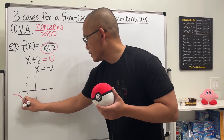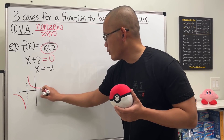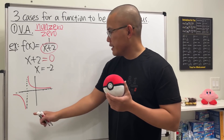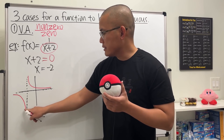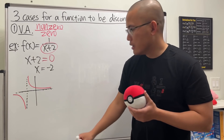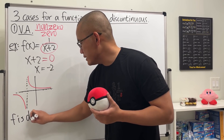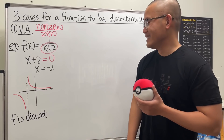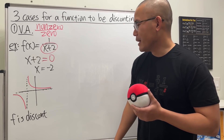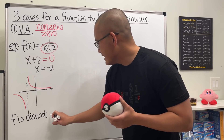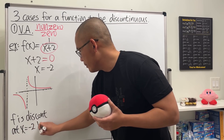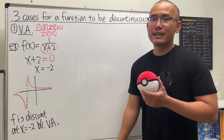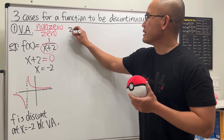We also have a horizontal asymptote. Either way you will end up with a picture like this graph. Right here we can clearly see that the function is discontinuous because the two parts are not connected. So f is discontinuous at x equal to negative two because of this vertical asymptote. That's the first case.